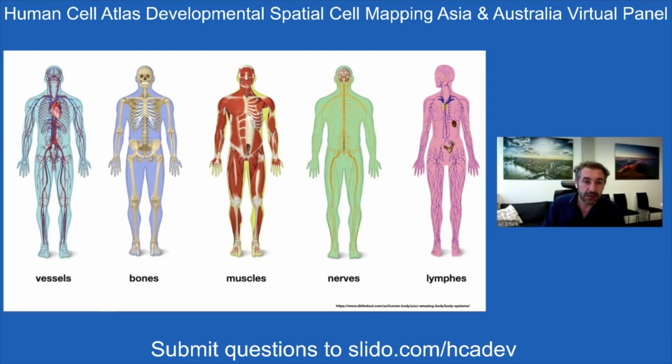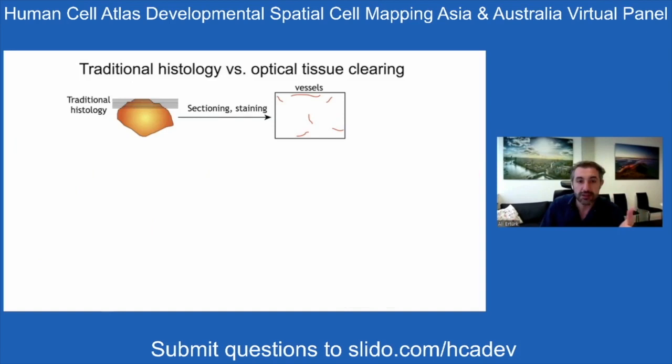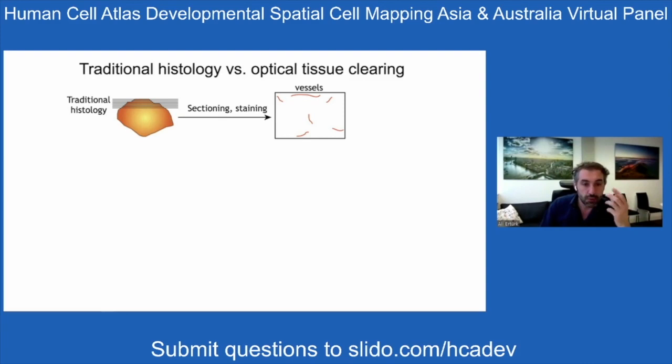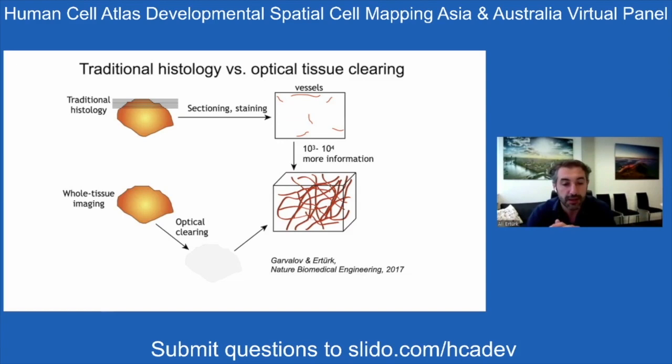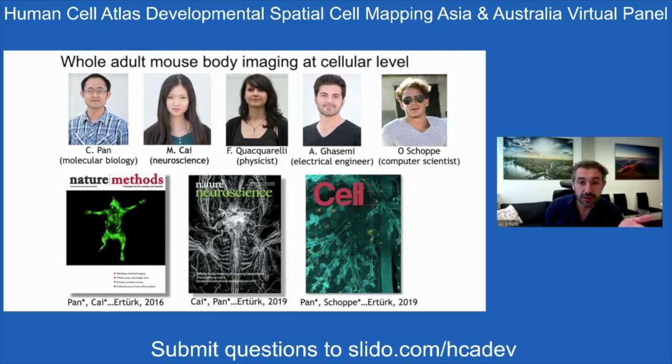Standard histology involves sectioning, staining, and examining slices, which is usually good — but if you want to study systems biology or complicated neural structures, that's not sufficient. Looking at fragments doesn't give us enough information. To overcome this, we and others have been developing optical tissue clearing technologies to convert biological tissue into a transparent structure — like converting bone into water — so we can see through and scan to obtain cellular details.